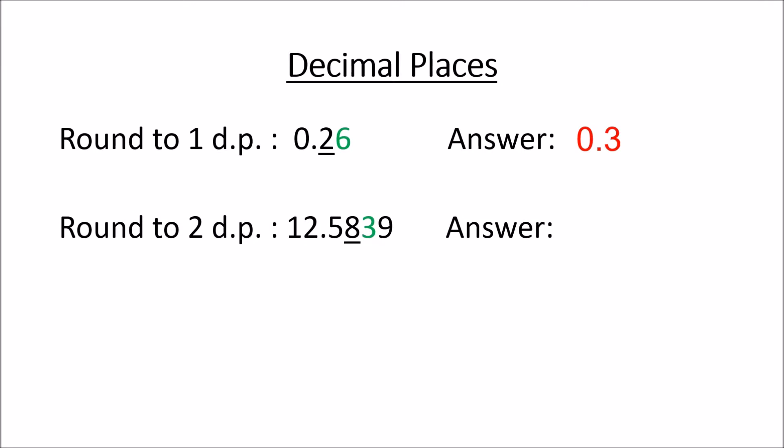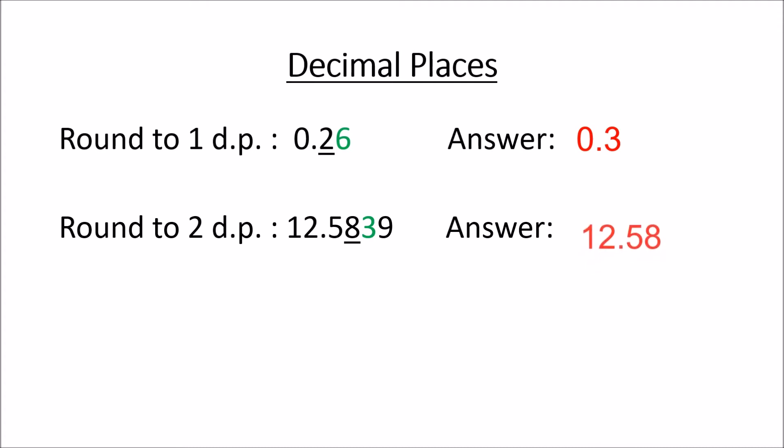Round to two decimal places: 12.5839. Underline the 8 because that's two digits after the decimal point. Look at the 3 behind it — do you have to change it? No. Once it's less than 5, you don't have to change the number. So it becomes 12.58, because there's a 3 after the 8. You want two numbers after the point.